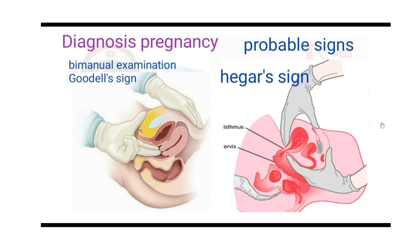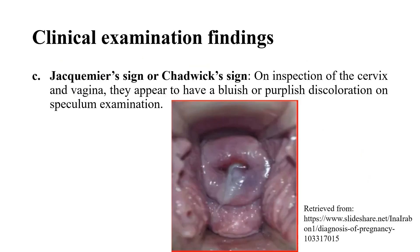On bimanual examination, Goodell's sign and Hegar's sign are assessed together. We can also identify Jackmear's sign and Chadwick's sign. These signs are examined via speculum examination of the vagina and cervix.